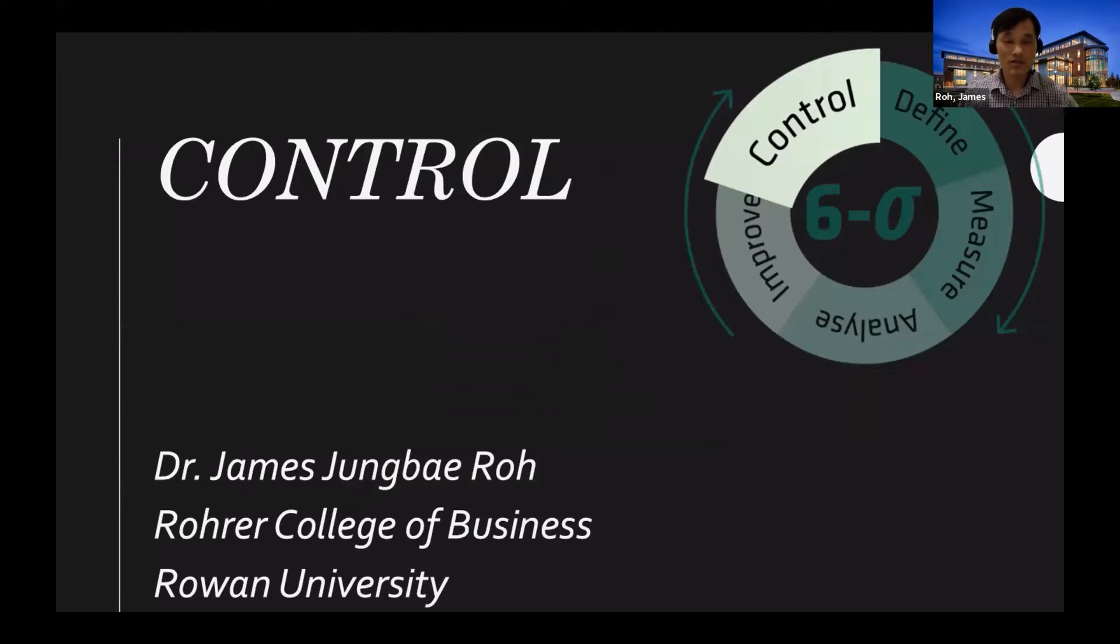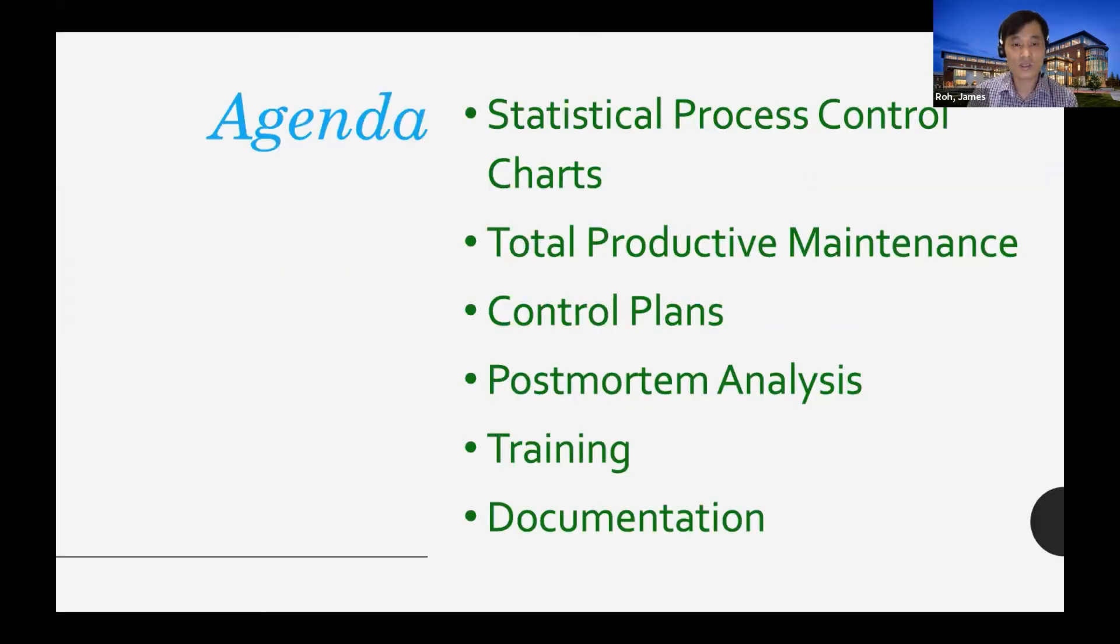Let me cover what is important in this control phase and then wrap up the lecture. In the control phase we normally have to think about statistical process control charts because we have to understand what is happening with the process. To control it, you have to understand the status of the process, and for that we can use statistical process control charts.